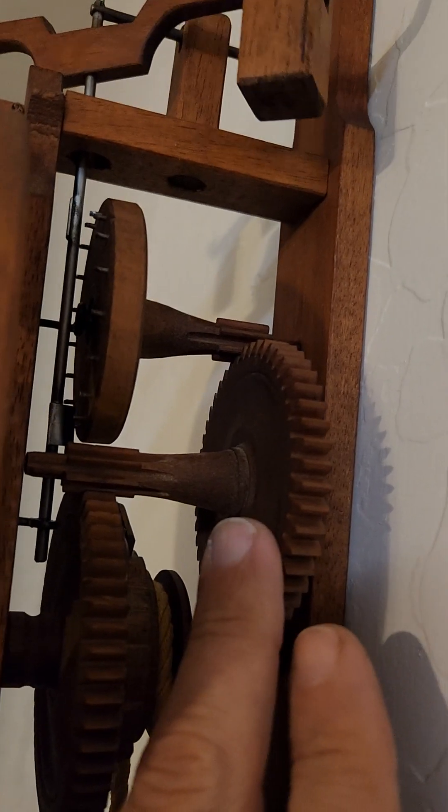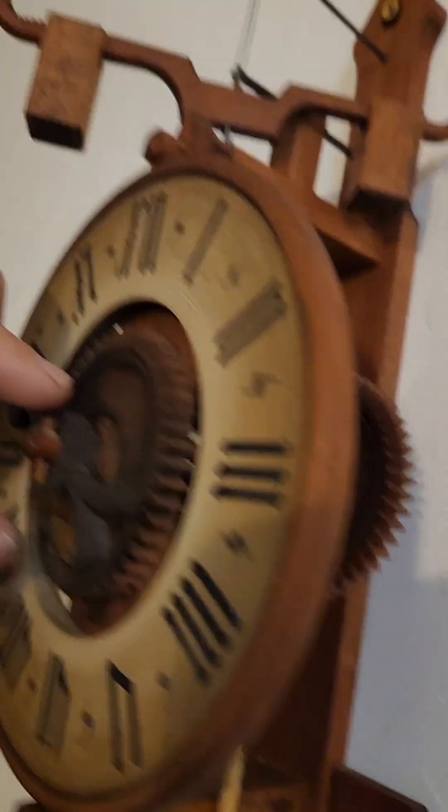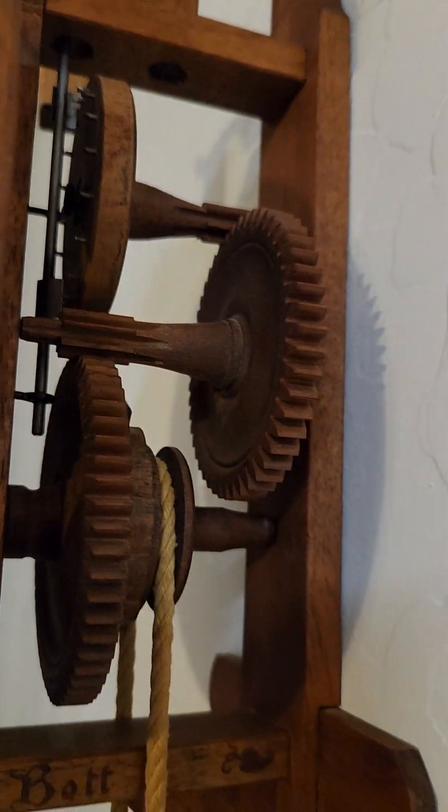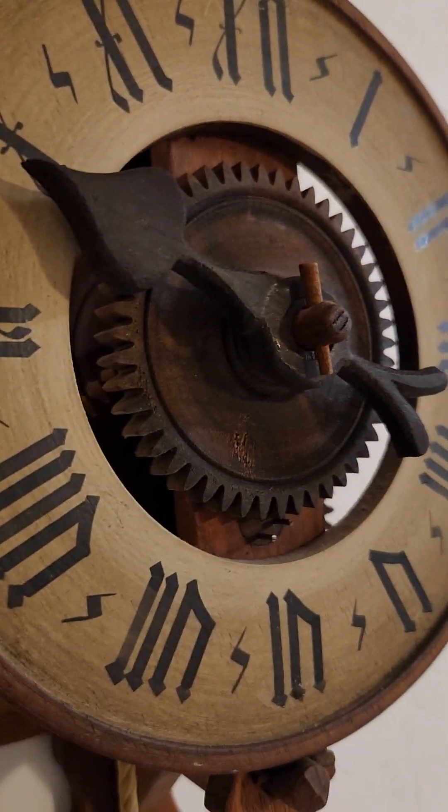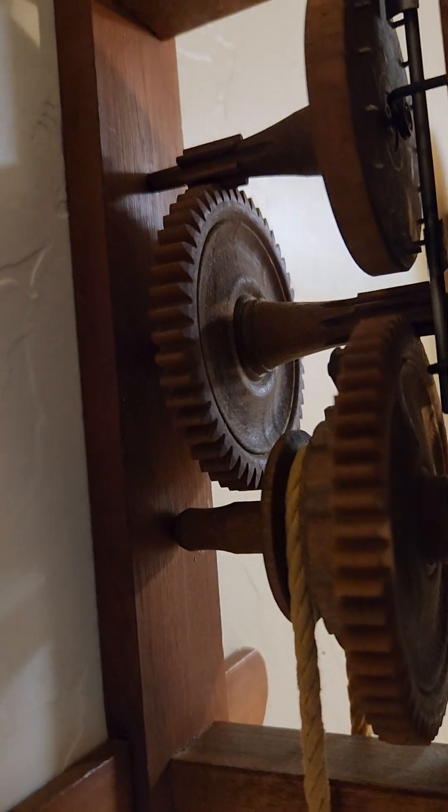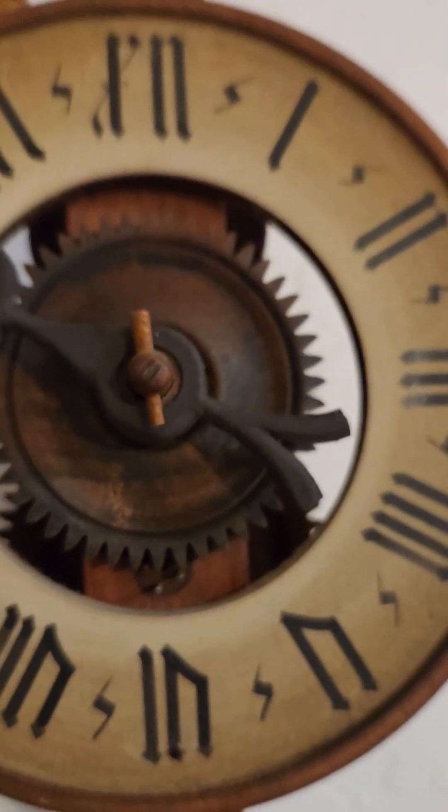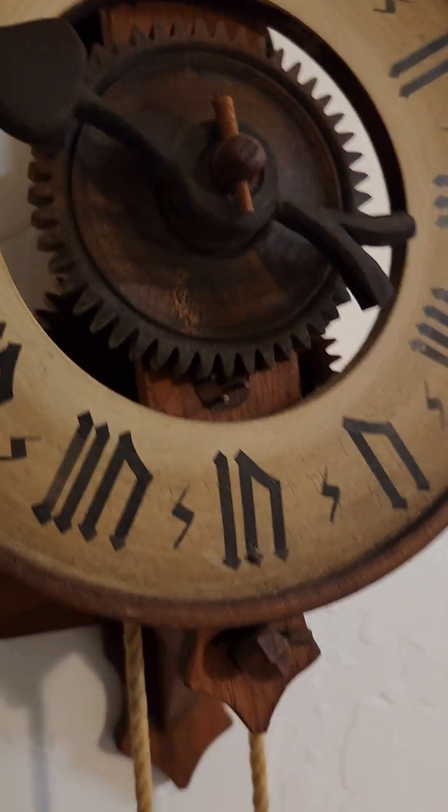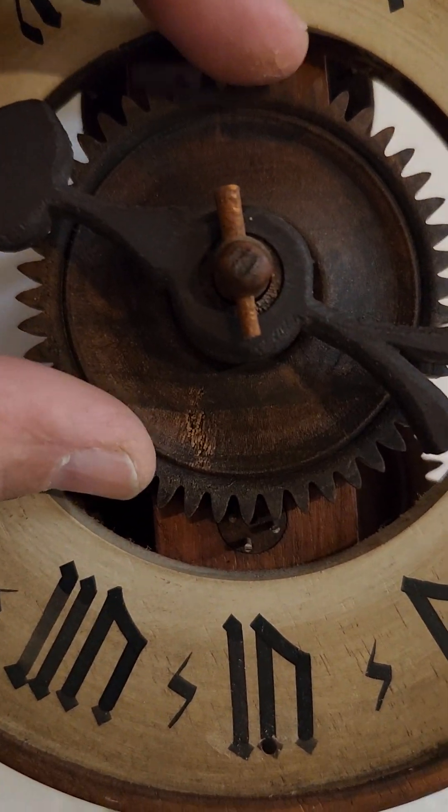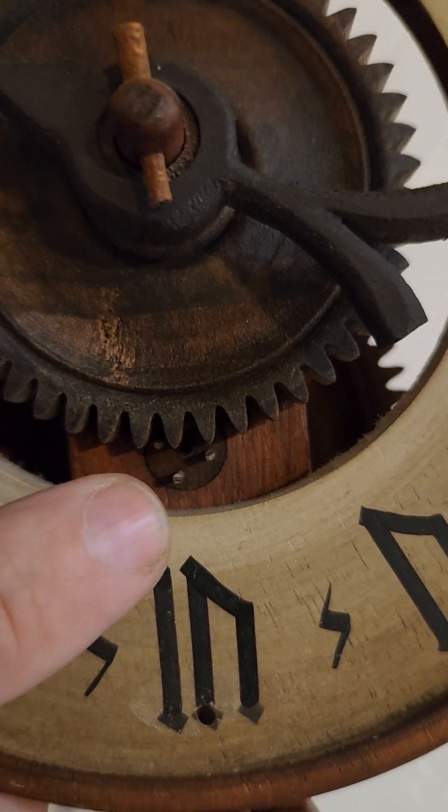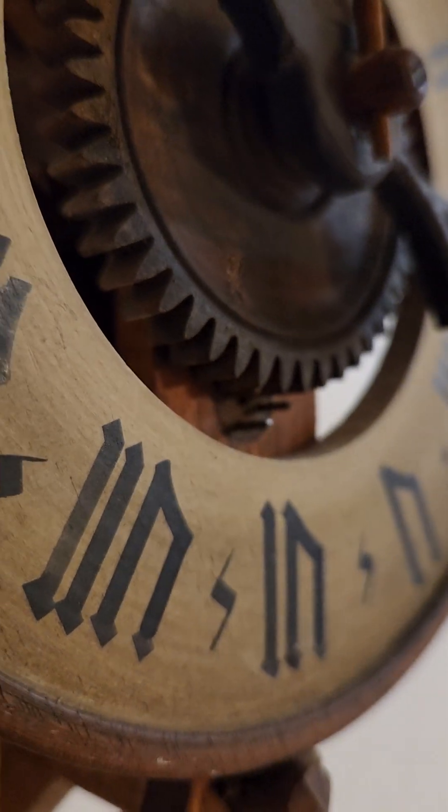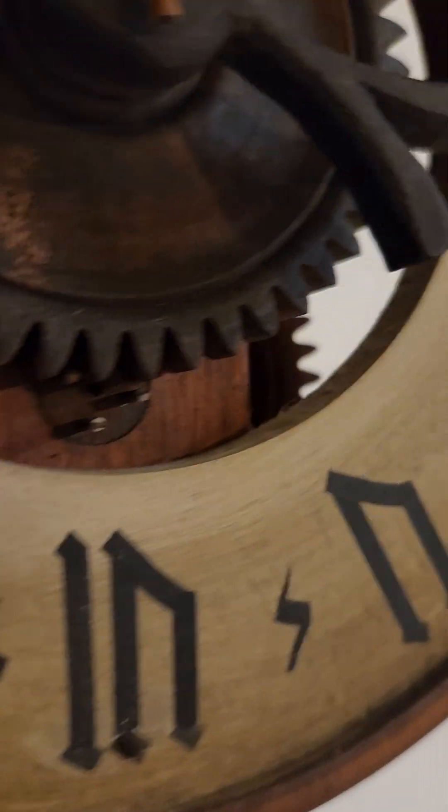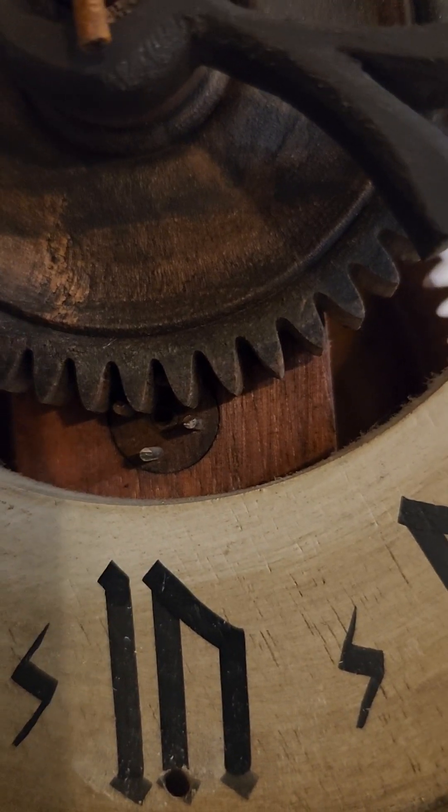Now, normally this wheel here, the center wheel, would be what drives what you see up front. So this would be called the time train or the going train. And this here is what's called the motion works, what actually displays the time. In this particular case, it's very interesting because you see this big fat gear here, and then these little pins, which form essentially a gear, but they form essentially one half of what would otherwise be called a lantern gear. And you could at that point then call these pins trunnions associated with that gear.